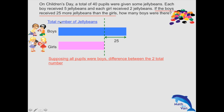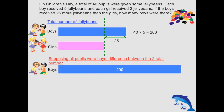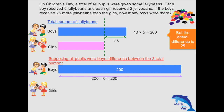So all pupils were boys — 40 of them — so 40 times 5 equals 200. The boys would have 200 jelly beans and 0 girls, so 0 jelly beans from the girls. We can see that the difference is 200. But in the actual question, the difference is only 25. So I do have a gap of 175 to close so that I can achieve the desired state of the boys having 25 more jelly beans than the girls.